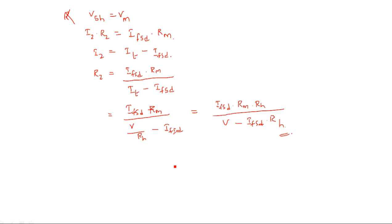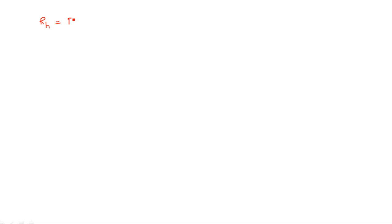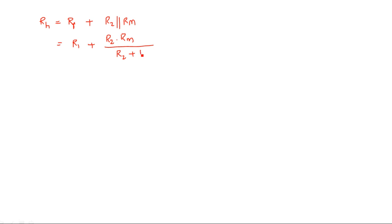Now let us see how to calculate the value of R1. We know the relation: RH equals R1 plus R2 parallel RM. From the circuit we can say that R1 plus R2 parallel RM equals R1 plus R2 times RM divided by R2 plus RM.